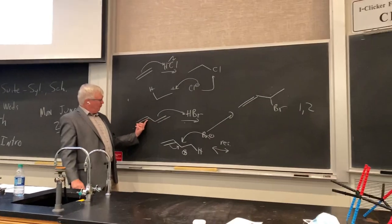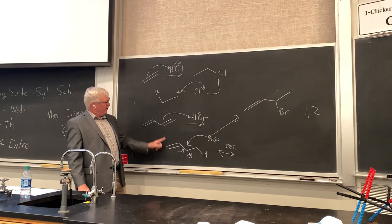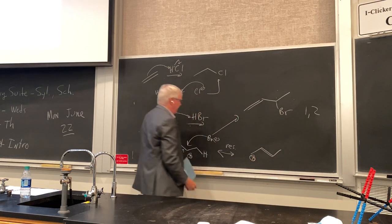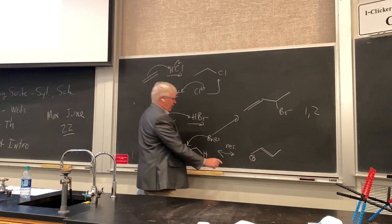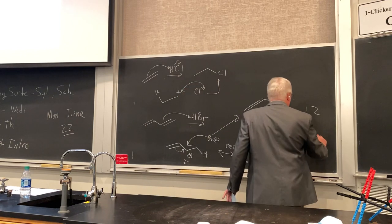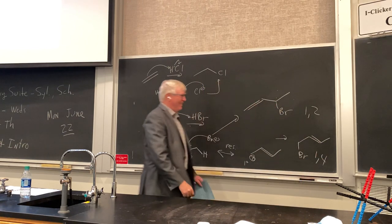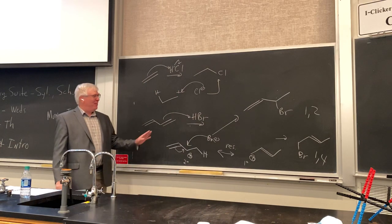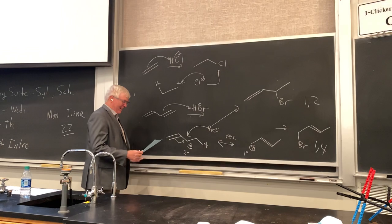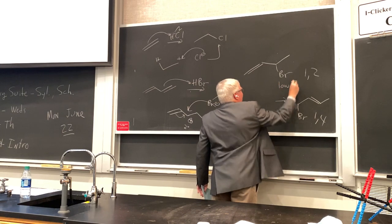But the intermediate carbocation can also resonate - we push the electrons over because the two pi bonds are communicating. There's some double bond character in what we draw as a single bond. The cation can be at the secondary position or resonated to the primary position, and attacking bromide there gives a different product: the 1,4-product instead of the 1,2-product. This is the key reaction for chapter 16.